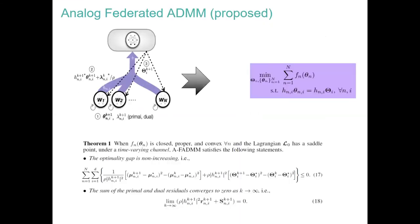We formulated this analog FL as a constrained optimization problem and solved it using the classical primal-dual ADMM. We also proved in the convex case that analog ADMM satisfies two statements: one is that the optimality gap is non-increasing, and the other is that the primal and dual residuals converge to zero as K goes to infinity.